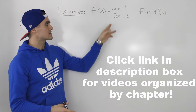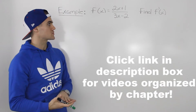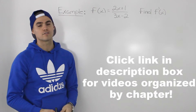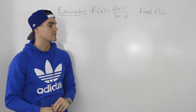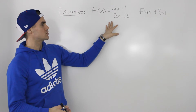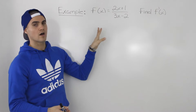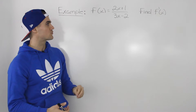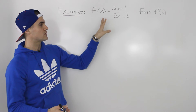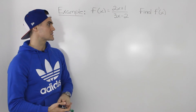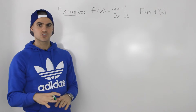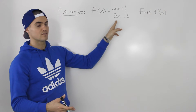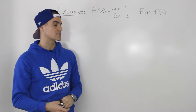In this example, we're given f of x equals 2x plus 1 over 3x minus 2, and we have to find the derivative f prime of x. This type of function we haven't really dealt with other than when we dealt with the definition of a derivative. We found the derivative of a similar function before, but is there a quicker way to find the derivative of a function like this?